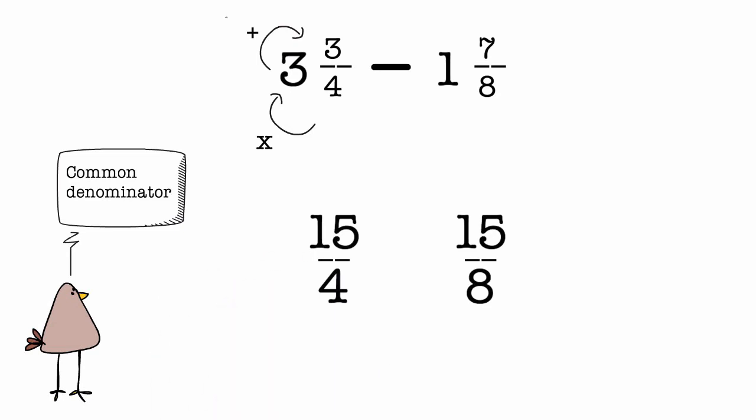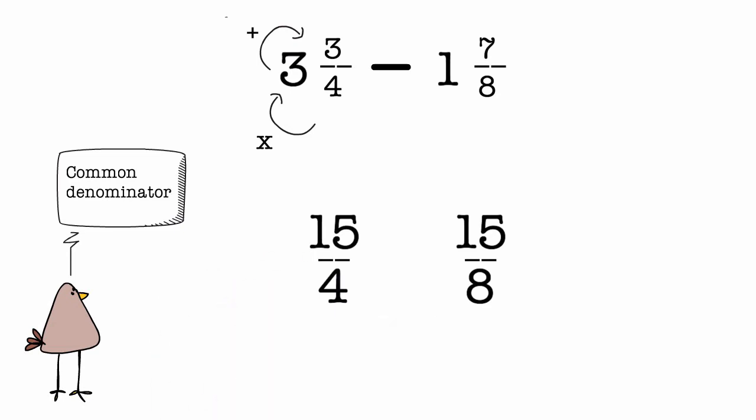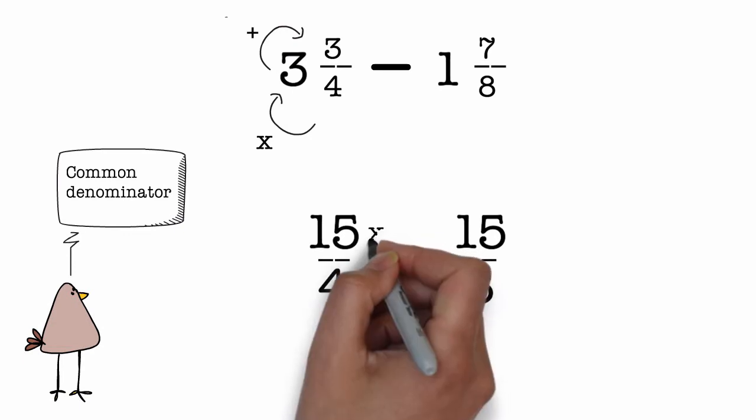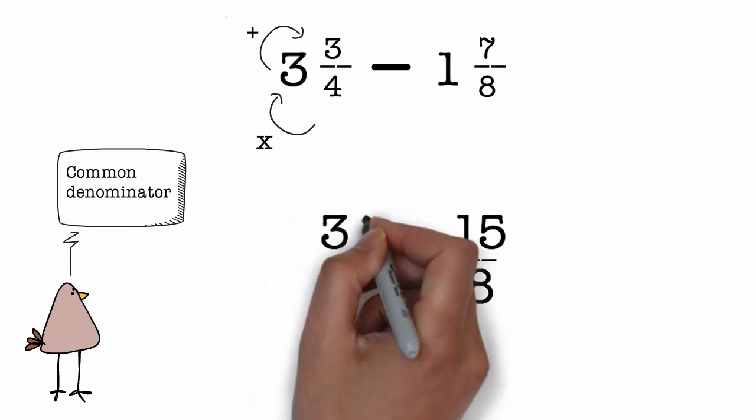But if we just multiply the denominator by 4 that will change the fraction - we do not want that. But if we multiply both the numerator and denominator by 2, the fraction remains the same. So we get 15 times 2 divided by 4 times 2 and that is 30/8.